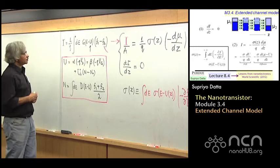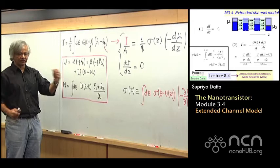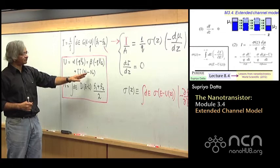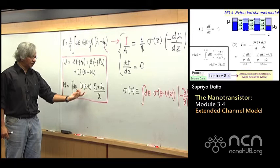It's in your notes — I'm not going into it — which relates the potential U to the electron density as it varies along the channel. So in the point-channel model, the number of electrons is one number and the potential is one number. In the full Poisson equation, both change with Z, and they are related by a differential equation — that's the Poisson equation.